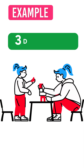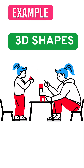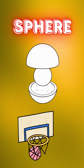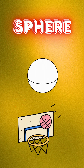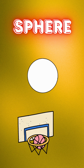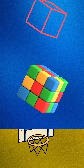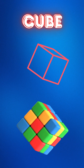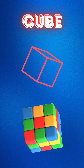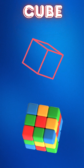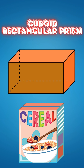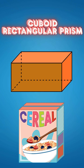Here are some examples of 3D shapes. A sphere, like a basketball. A cube, like a Rubik's Cube. A cuboid, or rectangular prism, like a cereal box.